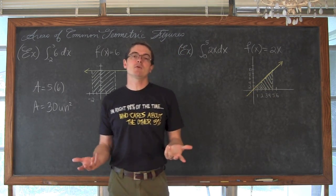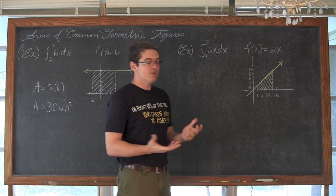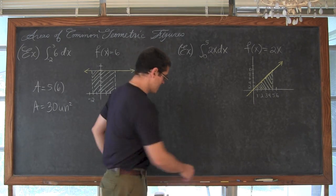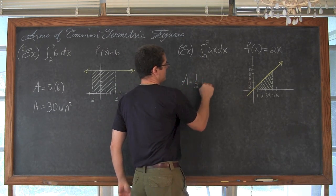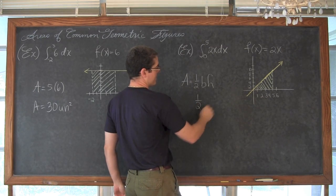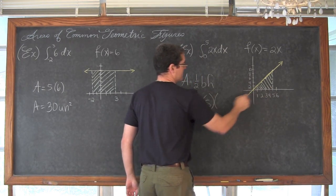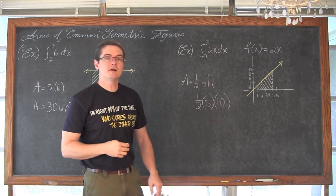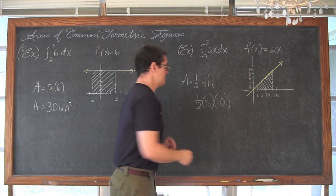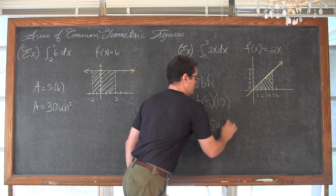I don't need to go through the limit process or Riemann sum to figure out that area. I can just do my old school geometry formula, which is area equals 1 half base times height. So it is going to be 1 half, our base of 0 to 5 is 5, and a height of 10. Half of 10 is 5, and 5 times 5 equals 25 units squared.